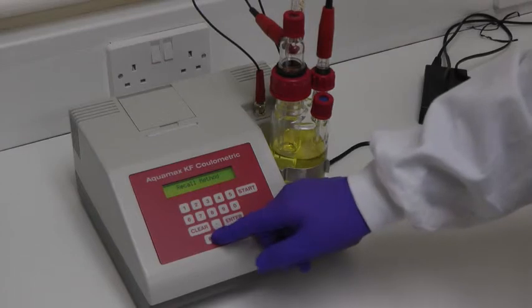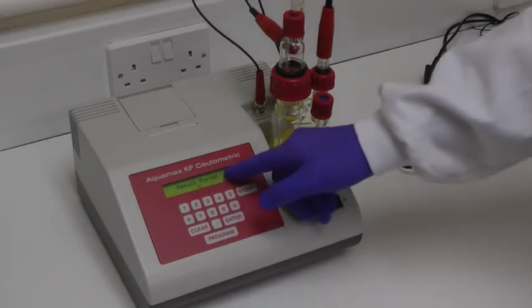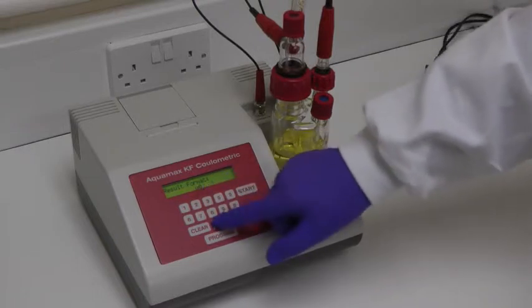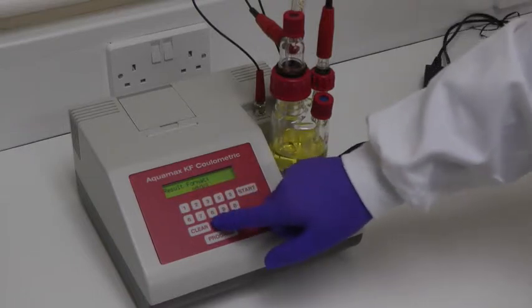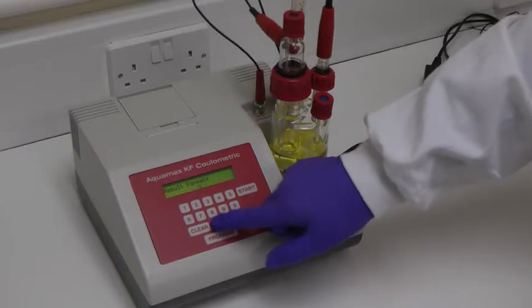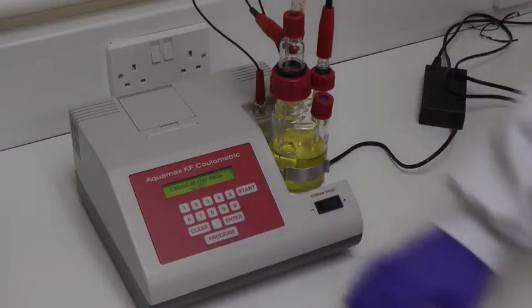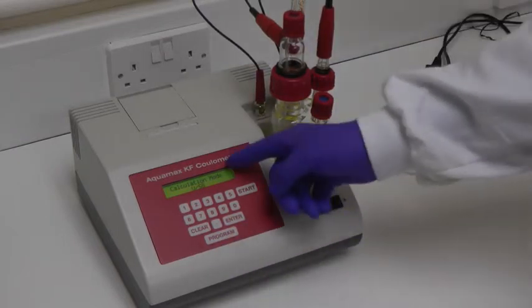The next parameter is Result Format. Pressing the decimal point will cycle the format through microgram, ppm, mg per kilogram, and percentage. Press Enter to select the required format, and then Enter again to move to the next parameter.